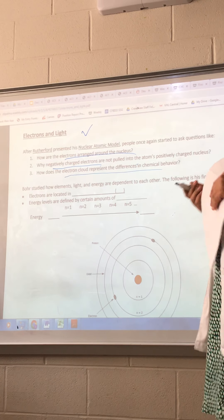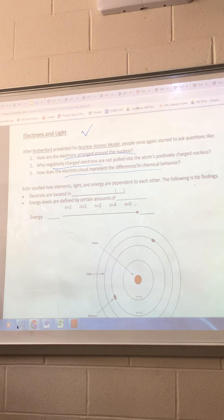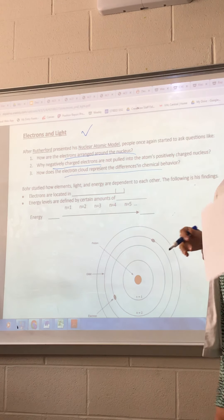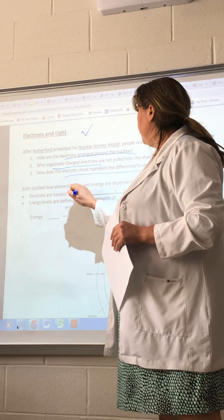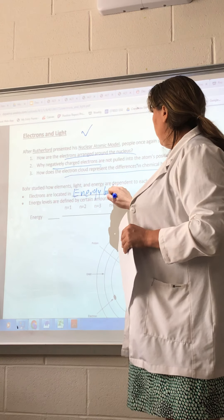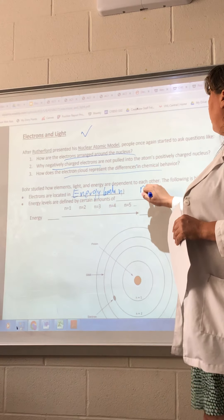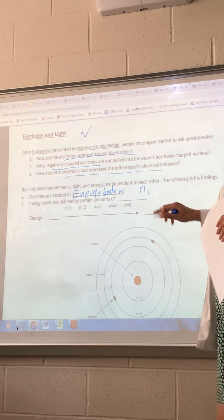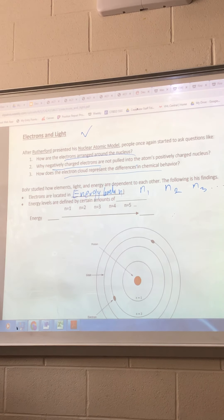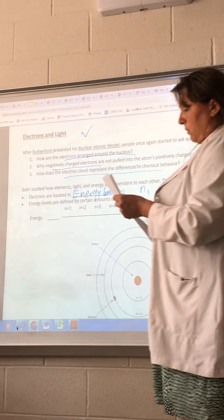So Niels Bohr studied some of these questions and here are his findings. Electrons are located in energy levels which he called N. So you have N1 as the first energy level, N2, N3, and so on. Energy levels are defined by certain amounts of energy.